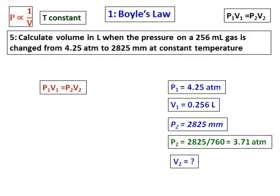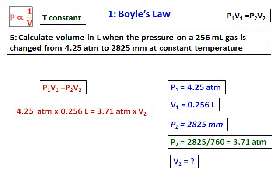Substituting all values — P1, V1, and P2 — into the formula, we solve for V2. The pressure decreased from 4.25 to 3.71 atmospheres and the volume increased from 0.256 to 0.293 litres, in accordance with Boyle's law.